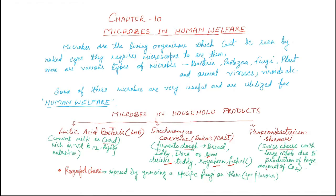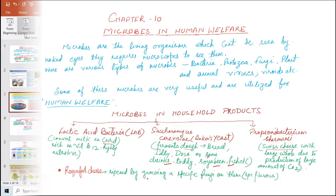Swiss cheese has large holes due to the production of a large amount of CO2. Another type of cheese is Roquefort cheese, which is ripened by growing a specific fungi on it, giving it a specific flavor. These are some examples of microorganisms helping us in household activities.